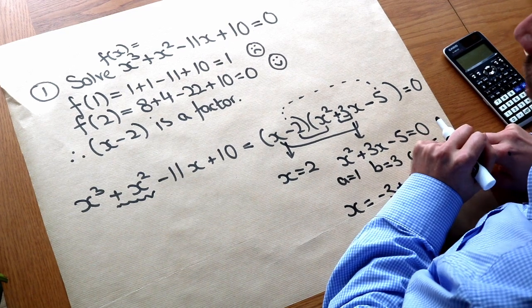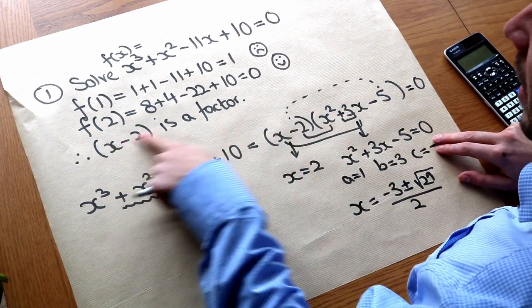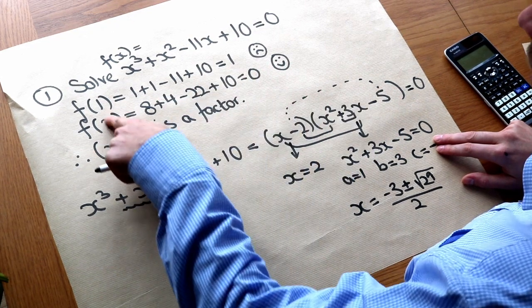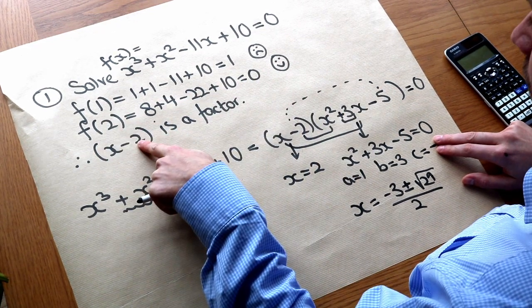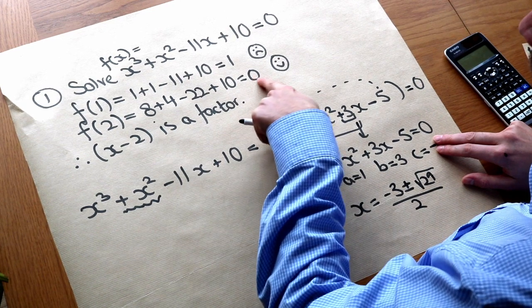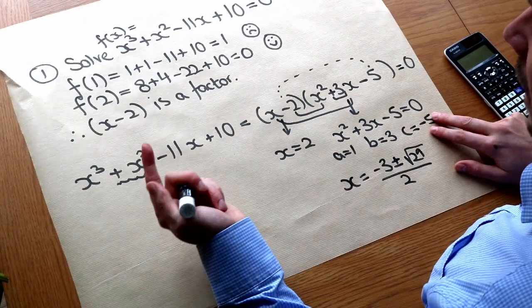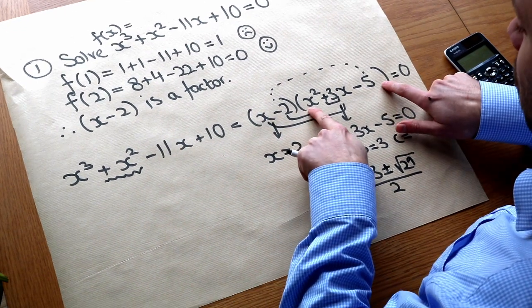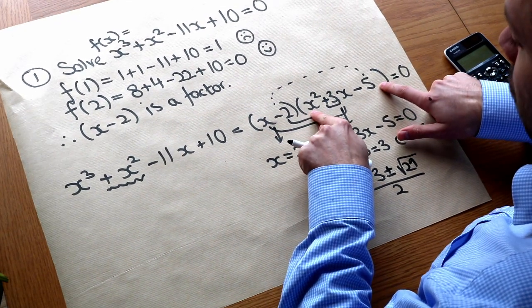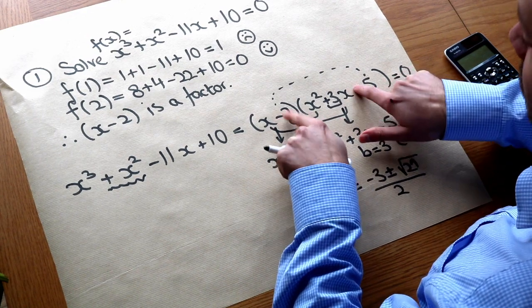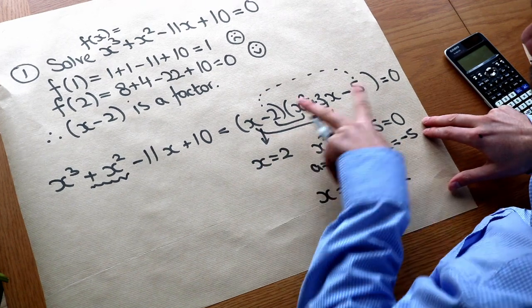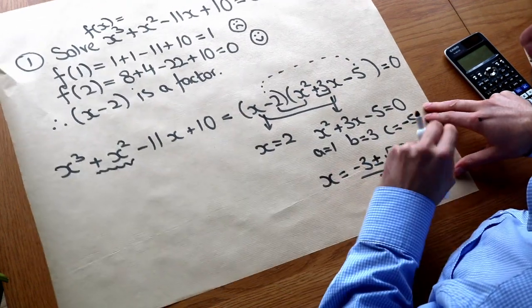So just to recap, the strategy is to work out an initial factor by just plugging in different values and using the factor theorem to turn that into a factor. Remember that we have to get zero as the output. And then use algebraic long division as we saw in another video or my preferred method of sort of using your common sense to work out the other bracket by considering the expansion. And then we can say either that is zero to get the two or that equals zero, which we then use the quadratic formula.